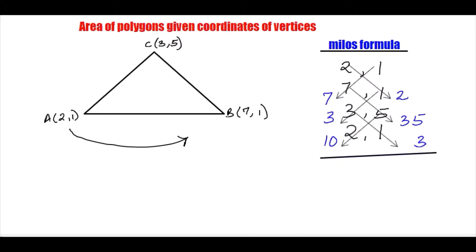Now I'll go ahead and make a summation on both sides. So I will add 7 plus 3 plus 10, this will give me 20. And then I'll have 2 plus 35 plus of course 3, this will give me 40 here.